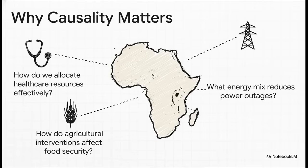And why does this matter so much? Because the continent's most urgent questions aren't about just recognizing patterns. They're about intervention. To solve huge real-world problems in healthcare, energy, and food security, you need an AI that can reason about the consequences of your actions.